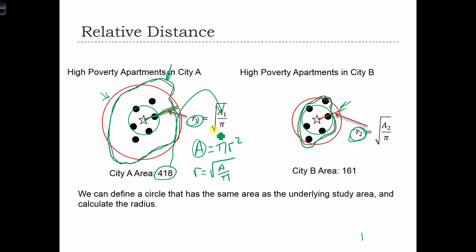So if City A and City B were perfect circles with the same area, we would be able to extract this radius of each of those two circles and use them in our standard distance statistics. In the first case, the radius for City A is the root of 418 over pi. And the radius for City B is the root of 161 over pi. These areas are measured or calculated in a GIS, and they have to be in the same units as the distance calculations for the standard distance statistic.